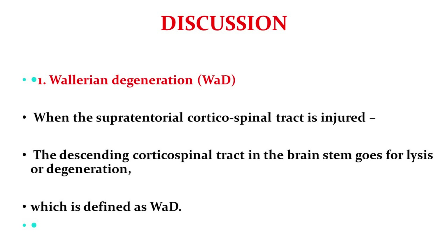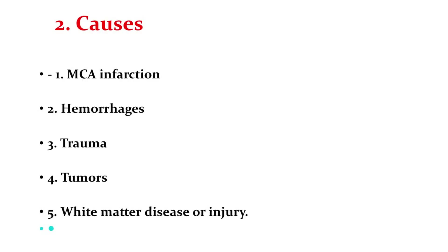Here, the supratentorial corticospinal tract is injured, and hence the descending corticospinal tract and the corticobulbar tract in the brainstem undergo lysis and degeneration. The causes are given — it is most commonly due to MCA infarct, which can be either hemorrhagic or ischemic.